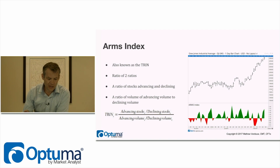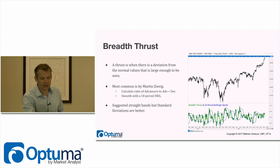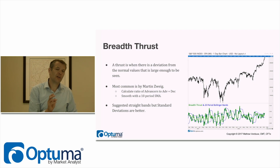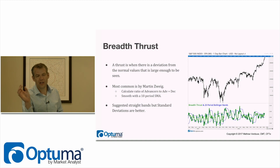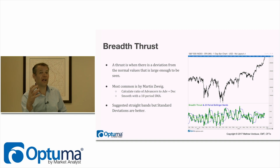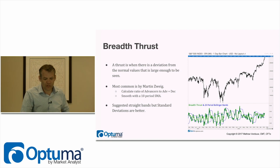You can look through the Arms Index chart to identify various opportunities. The Breadth Thrust, written about by Martin Zweig, takes a ratio of advances to the sum of advances and declines — not including the unchanged — then smooths it out and looks for signals based on excursions outside Bollinger Bands. Bollinger Bands are used repeatedly here because they're a simple way of computing a standard deviation over a look-back period and identifying extreme overbought or oversold values.